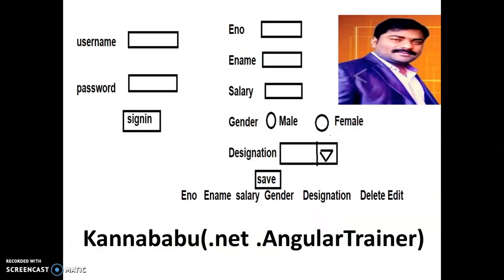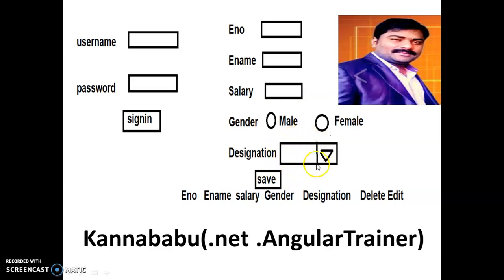My requirement is to design one login page. Admin will login with username and password, and when I click on the Sign In button, it has to navigate to another page — the Employee Registration page — where I want to design fields for Employee Number, Employee Name, Salary, Gender, and designations in a drop-down list. When the user clicks Save, I want to store the data in the database and display it in an HTML table.